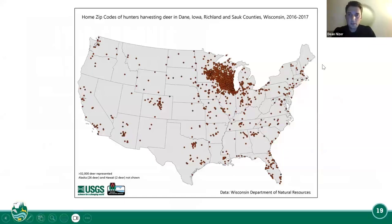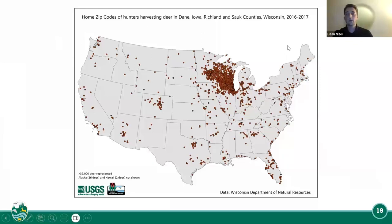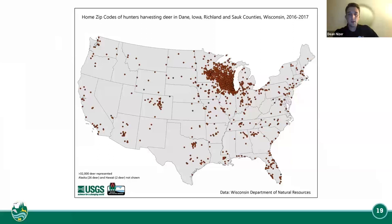Here you can see four different counties in Wisconsin. From these zip codes in 2016 to 2017, 32,000 deer were harvested in Wisconsin — 26 of them ended up in Alaska, and two in Hawaii. This map shows the dispersal rate of where hunters are transporting deer from Wisconsin throughout the country.